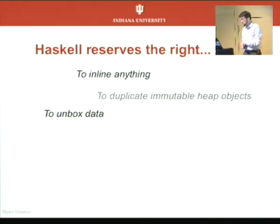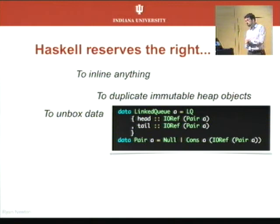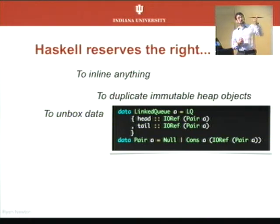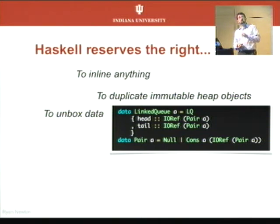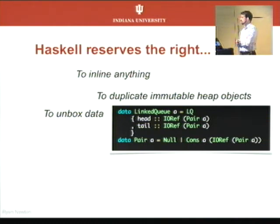Our Haskell implementation can also duplicate immutable heap objects — this is a big one. The first time I ported a particular algorithm, we were doing compare-and-swaps on pair values. It's going to be a pointer, it's not going to get unboxed, but the garbage collector can still duplicate these objects, which will completely screw up our pointer equality. So a good rule of thumb is to only do compare-and-swap operations on mutable IORefs. We fixed that bug by not comparing a pair, but explicitly comparing a pointer with a pair.